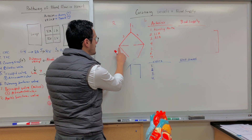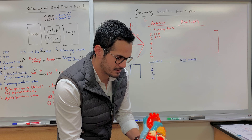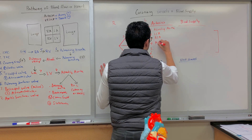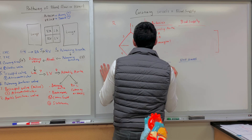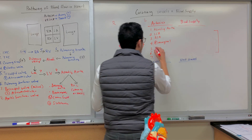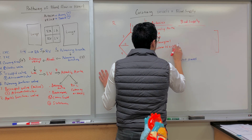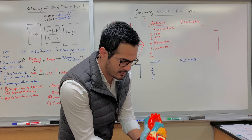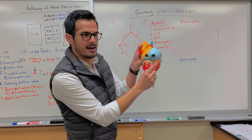On the right side, the branch here in the front — number four — is known as the marginal artery. Then the one that wraps around the backside is number five, the posterior interventricular artery. Coming off of the right side, that's what's going to be found here on the back — posterior interventricular.